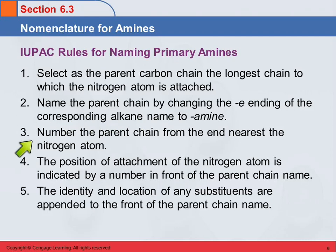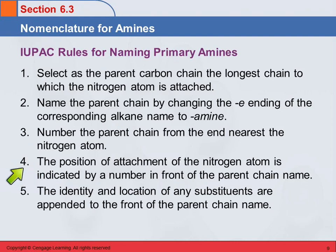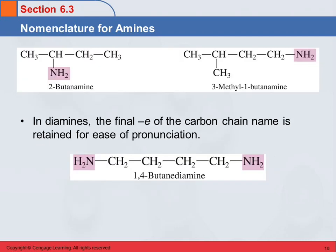Number the chain from the end nearest the nitrogen atom. The position of attachment of the nitrogen is indicated by a number in front of that parent chain. Then we identify and locate any substituents. Let's look at a couple examples.